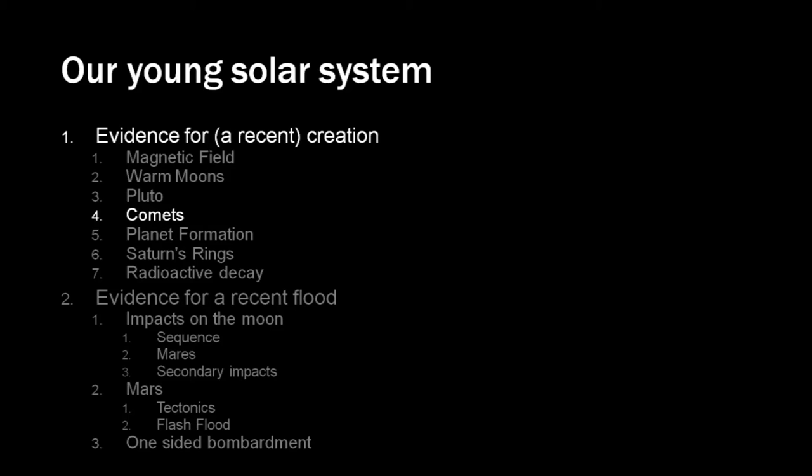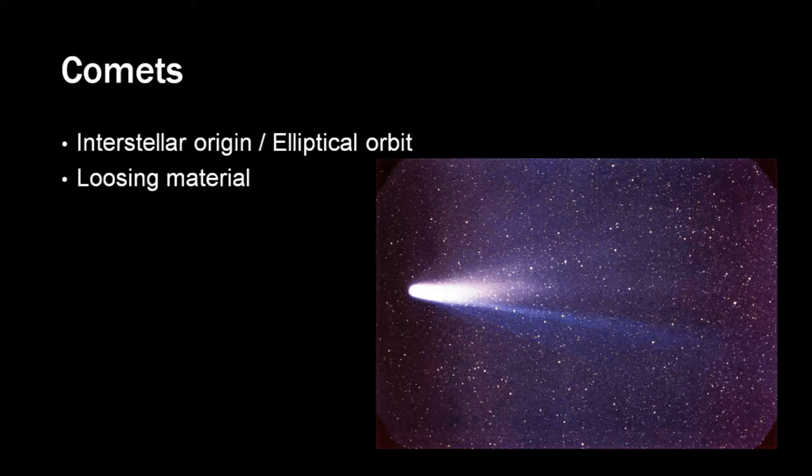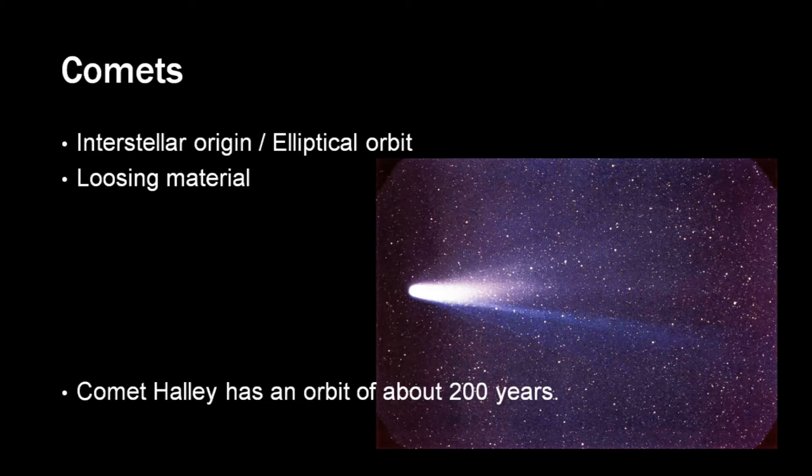Comets. Comets are those nice space objects that get a tail when they come close to the sun. Therefore, they are not merely rock like meteors are, but they also contain a lot of ice. All comets have an interstellar origin. Actually, that just means they have an elliptical orbit. An elliptical orbit means they pass the sun again and again. If they would pass the sun only once, their orbit would be hyperbolic. Every time they pass the sun, they lose some material, hence the tail. This one on the image is comet Halley. It passes the sun every 200 years. How much material would it have lost in only a few million years? Let alone billions of years? A lot. So much it cannot be billions of years old.